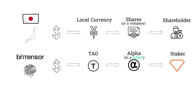When you purchase alpha in a subnet, your purchase has a small but immediate impact on the amount of tau that is emitted to the participants in that subnet. Without getting into the nitty-gritty of emissions, the higher the price of an alpha token, the more participants on that subnet are rewarded. Your alpha purchase is like a vote that you feel a subnet is valuable, in the same way that holding shares is a vote for you feeling that a traditional company is valuable.